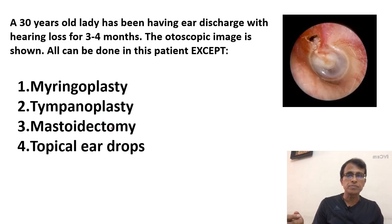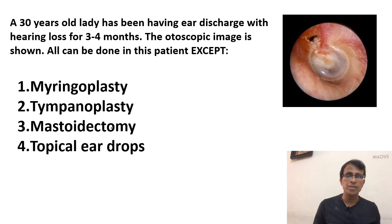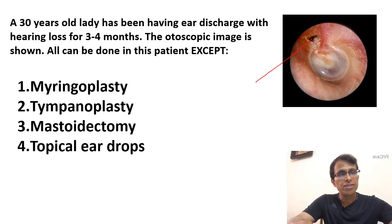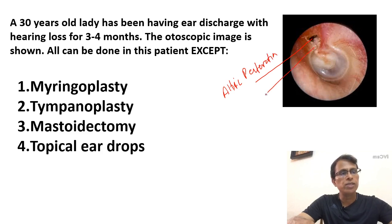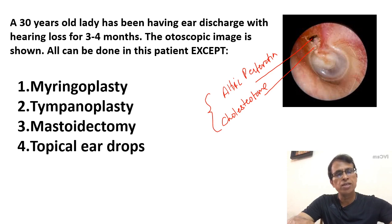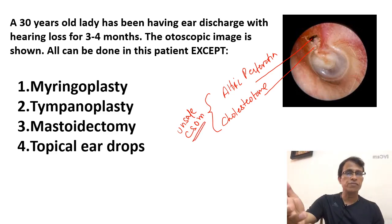Third question: a 30-year-old lady has been having ear discharge with hearing loss for a few months. The otoscopic finding is shown — which of the following cannot be done? Options are myringoplasty, tympanoplasty, mastoidectomy, or topical ear drops. First you have to make a diagnosis. What you see on the tympanic membrane is an attic perforation — this part of the tympanic membrane is the attic, pars flaccida, and there is a perforation. The white thing visible is cholesteatoma. With both attic perforation and cholesteatoma, this is clearly an unsafe CSOM.